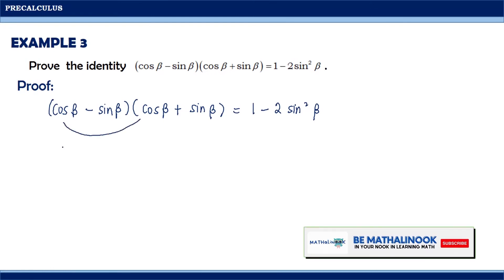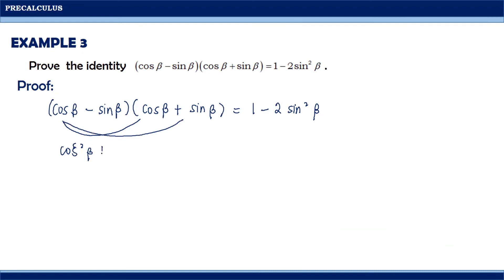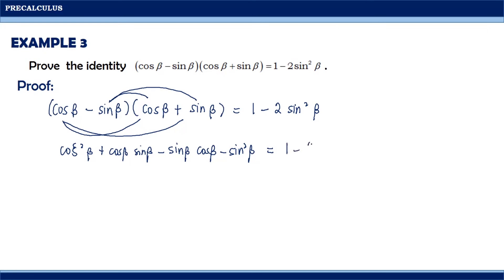So: cosine theta times cosine theta is cosine squared theta; cosine theta times sine theta is positive cosine theta sine theta; negative sine theta times cosine theta is negative sine theta cosine theta; and negative sine theta times positive sine theta is negative sine squared theta. On the right side, using the Pythagorean identity, sine squared theta equals 1 minus cosine squared theta, so we can write 1 minus 2 times (1 minus cosine squared theta). Going back to the left side, notice the middle terms cancel to zero, leaving cosine squared theta minus sine squared theta.